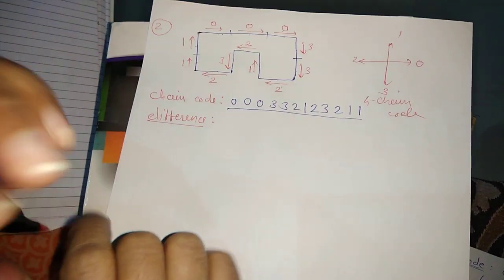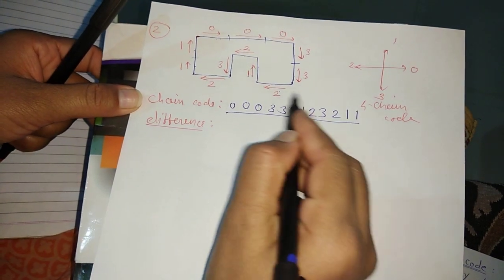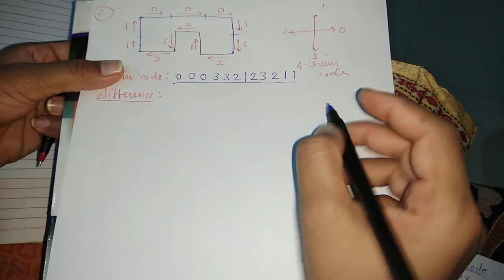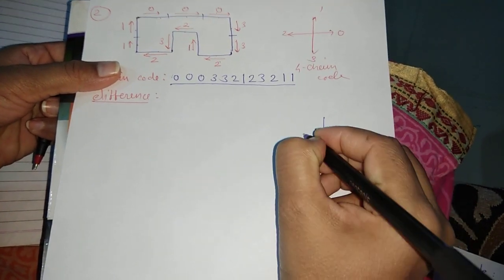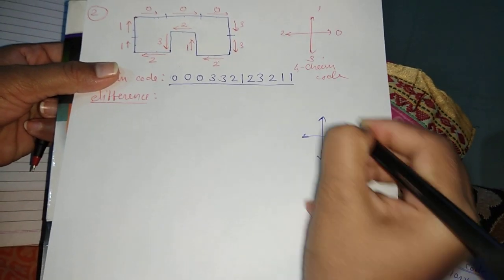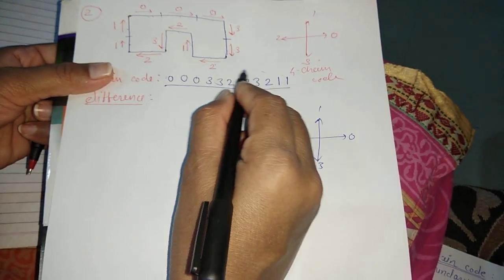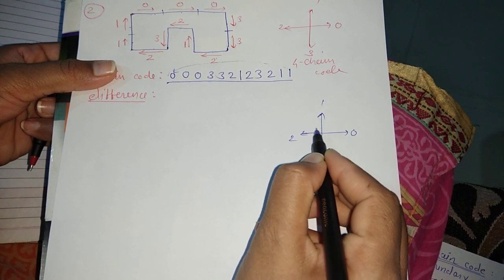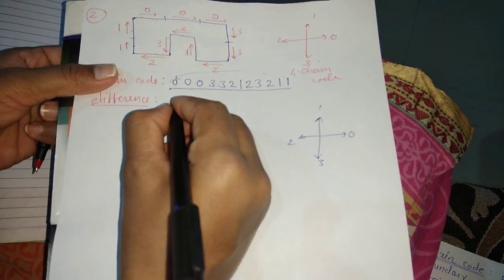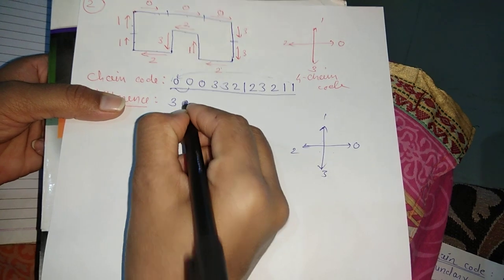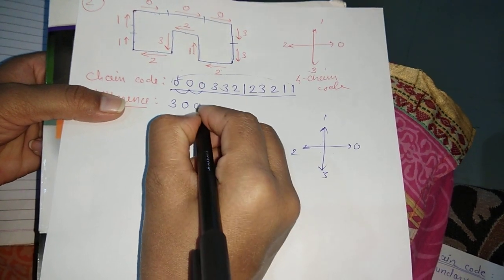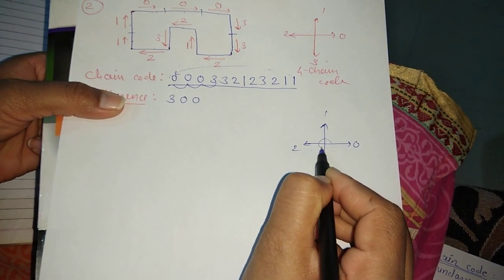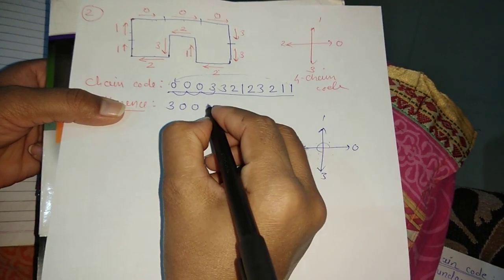The next step is to find the difference by moving in the anticlockwise direction. Using the 4-chain code (0, 1, 2, 3): for 1 minus 0 anticlockwise the difference is 1. For 0 minus 0 it is 0. For 0 minus 0 it is 0. For 0 minus 3 anticlockwise, moving 1, 2, 3 steps, the difference is 3.